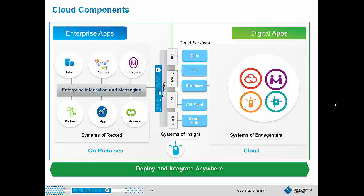For a public cloud, all parts including systems of record and services are deployed in a public cloud — for example, systems of record at MongoLab and services deployed in Bluemix — and you rely entirely on cloud providers to maintain the infrastructure. For a private cloud, you keep systems of record and services in your private network, with complete control and responsibility, leveraging virtualized systems to make it more cloud-like. A hybrid cloud keeps systems of record close to home and protected in your network, but services are deployed both in the public cloud and in your private network.